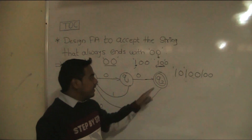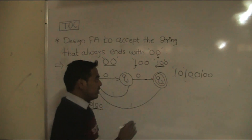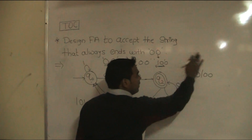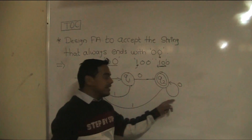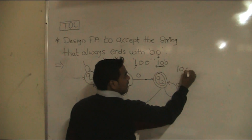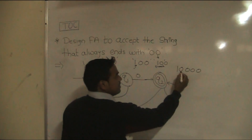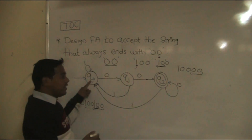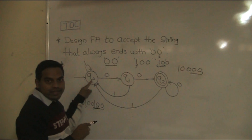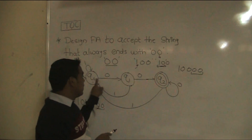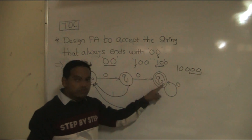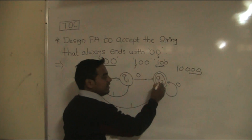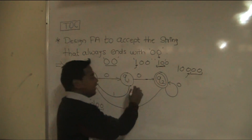At q2 state, suppose 0 occurs — keep it at q2 state. Whenever q2 state sees 0, it remains at q2. For example, the string 1, 0, 0, 0, 0, 0 ends with 00. At q0: 1 occurs → q0; 0 occurs → q1; 0 occurs → q2; then two more 0s occur → remains at q2, reaching the final state q2. So this string is accepted by finite automata. With this, we can accept any string whose ending symbols are 00.